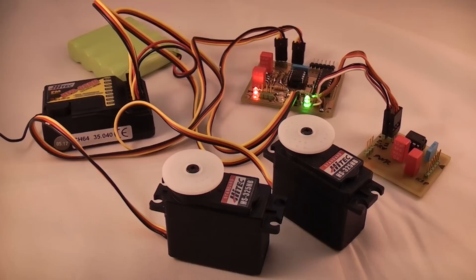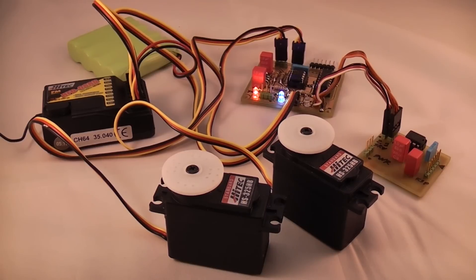If the incoming pulses are irregular or not present, the servo switcher uses a 4066 quad analog switch IC to route the microcontroller servo signals to the servos.